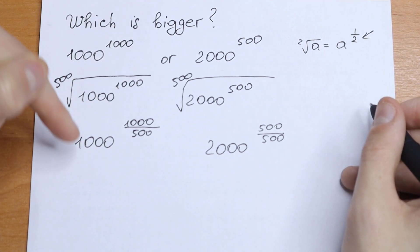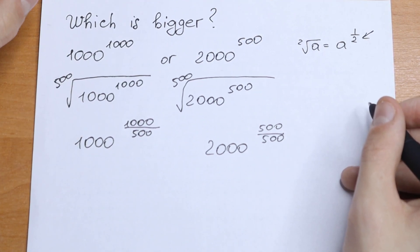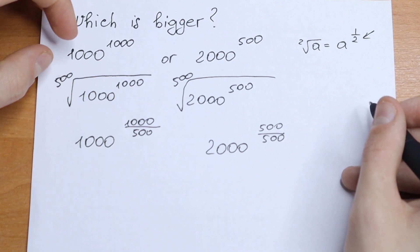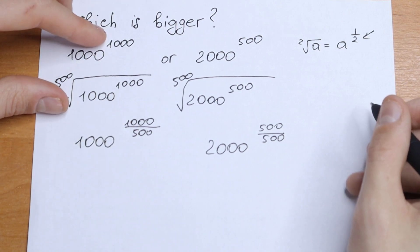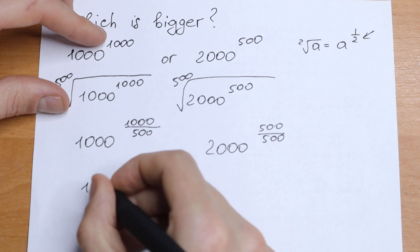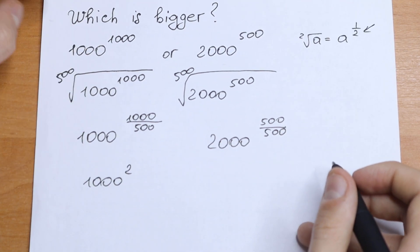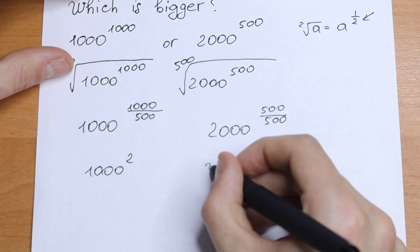So we rewrite this in a different way. This is the same. And take a look. 1000 divided by 500 will be equal to 2. We will have 1000 squared on the left, and on the right we will have 2000.